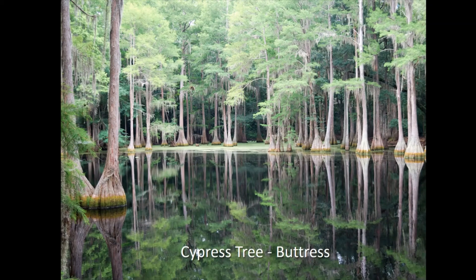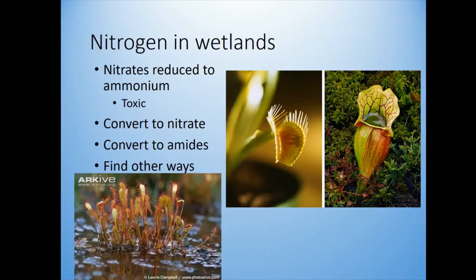Another interesting chemical challenge is that nitrogen in wetlands is really limiting — it gets reduced to ammonium, which is toxic to plants, so they need to convert it to nitrate or find nitrogen in other ways. This leads to weird adaptations: sundews, Venus flytraps, and pitcher plants that get their nitrogen from animal sources — basically insects flying around and landing on them.